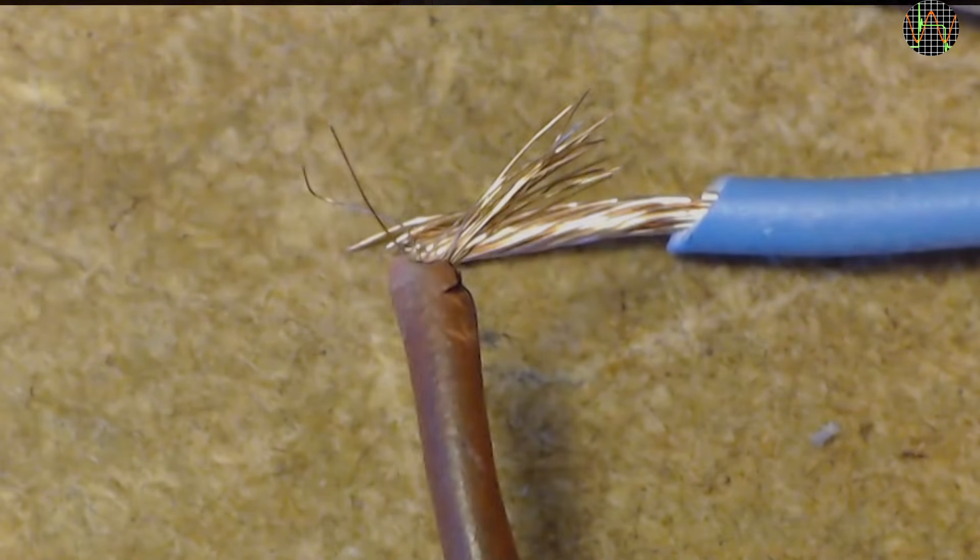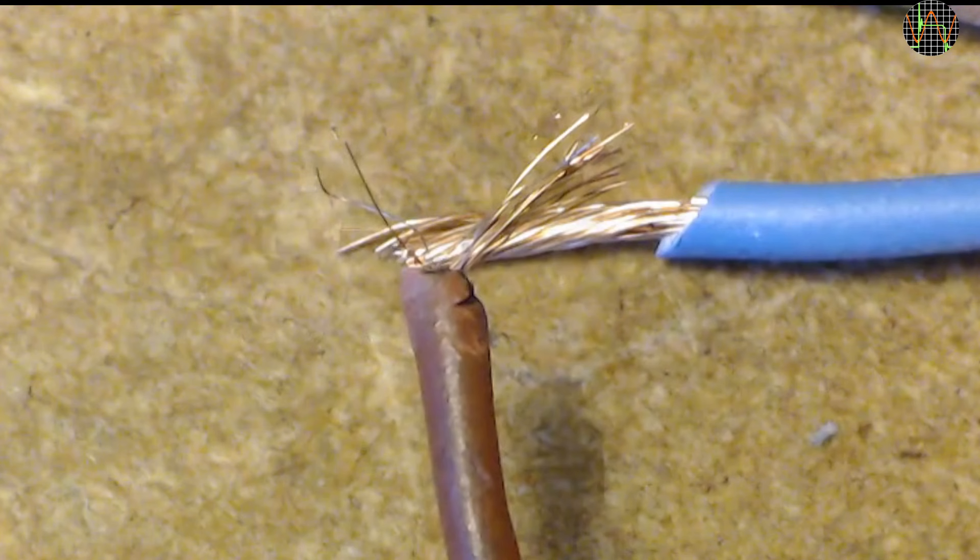For comparison, this is how a genuine 0.75 mm² wire looks like.